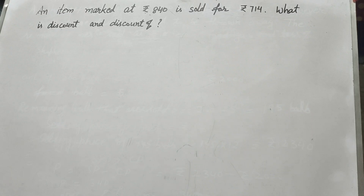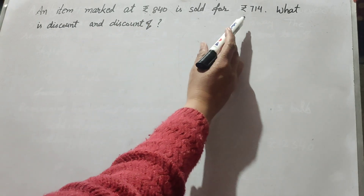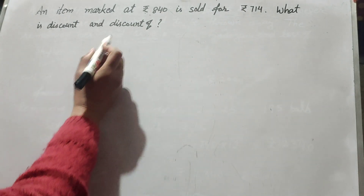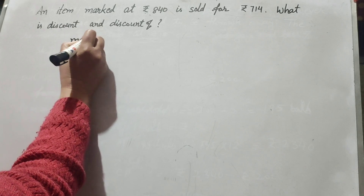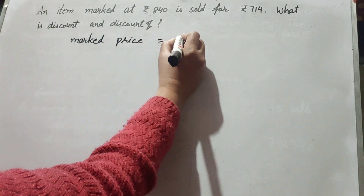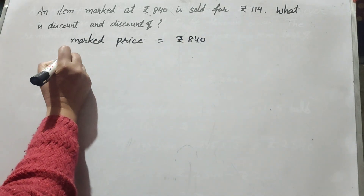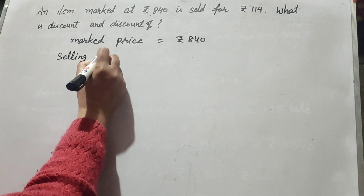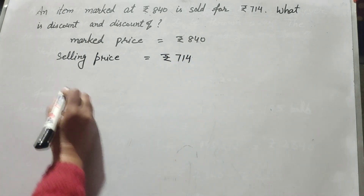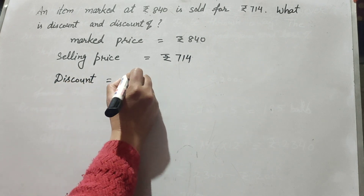Hello friends, welcome to my channel. In this video we discuss a question: an item marked at rupees 840 is sold for rupees 714. What is the discount and discount percentage? In this question, the marked price is equal to rupees 840 and the selling price is equal to rupees 714.